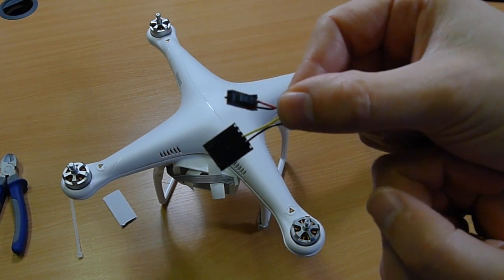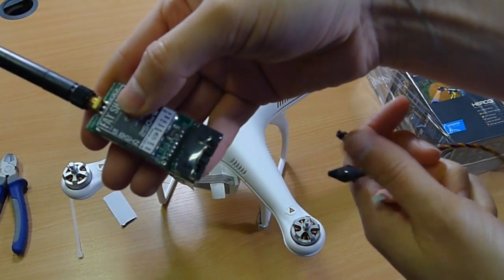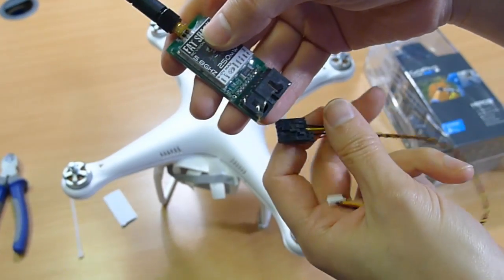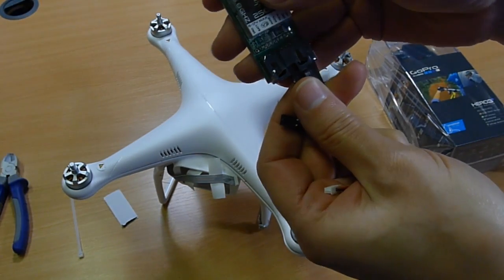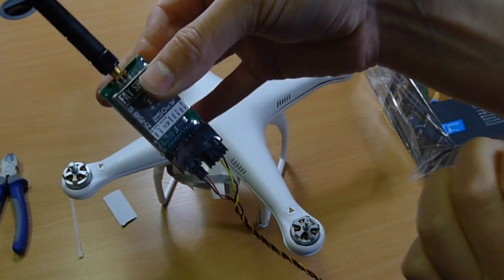Then on the other end it's got these two connectors which are suitable for a Fatshark or an Immersion RC transmitter. So we can just plug that into there, that into there, and you're good to go.